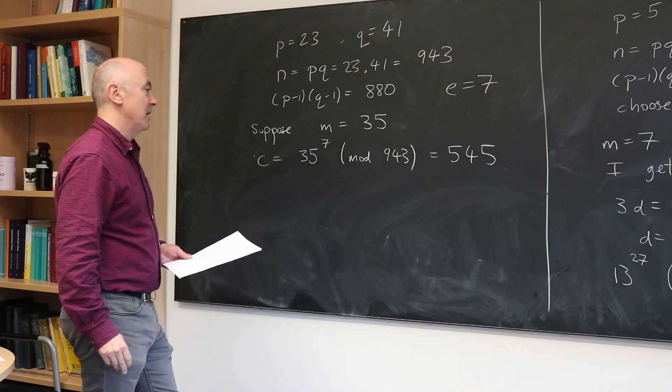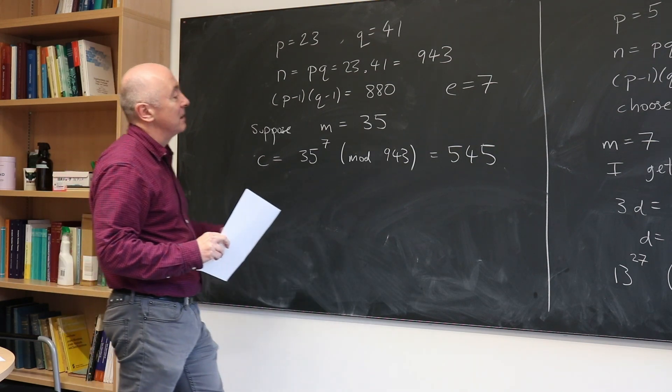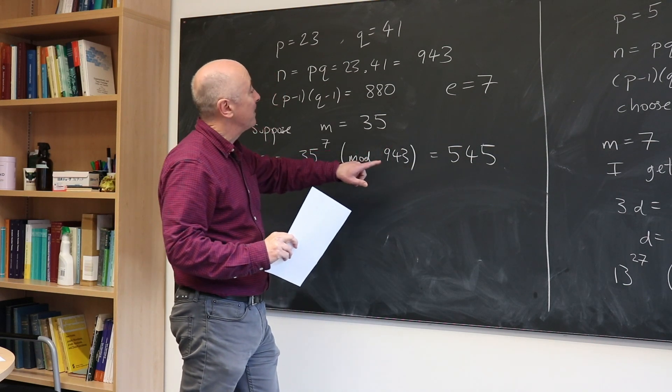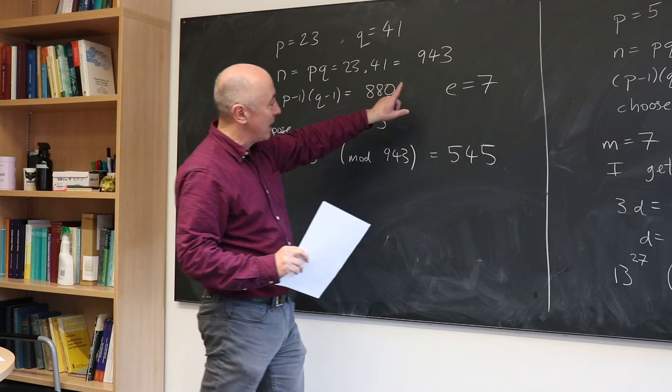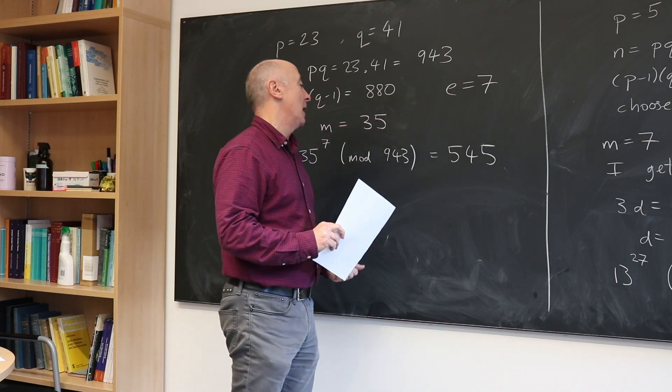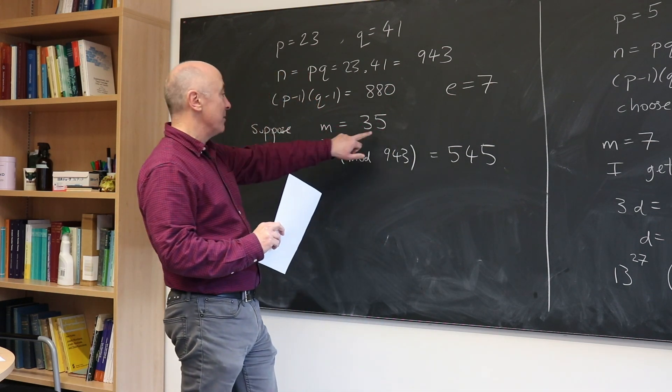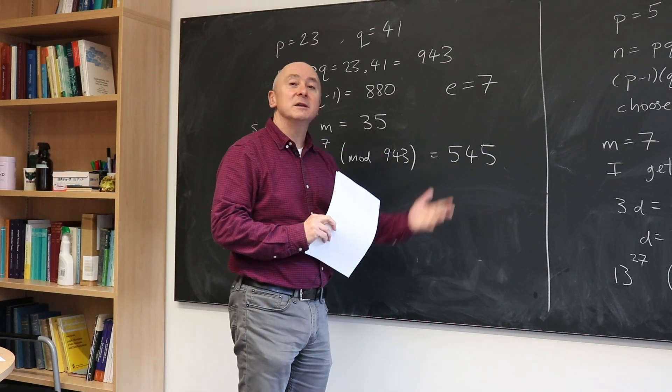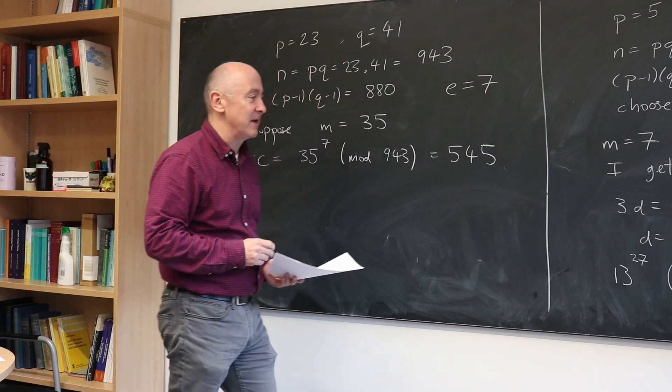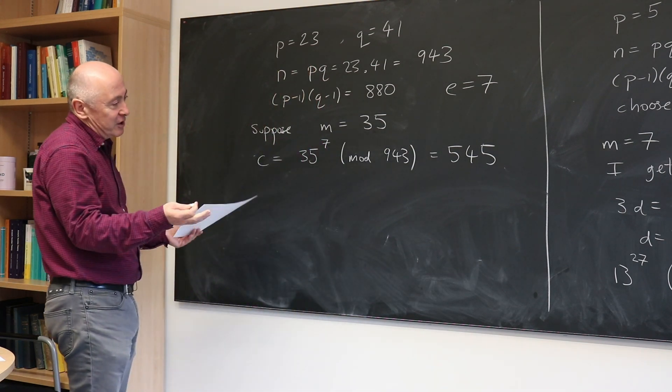And they can send me that publicly. They can tell me, aha, I used your N, 943. I used your E, 7. And the secret message I want to send you is encrypted to be 545. And they can take out a full page advertisement in their favorite newspaper, put all that information in.